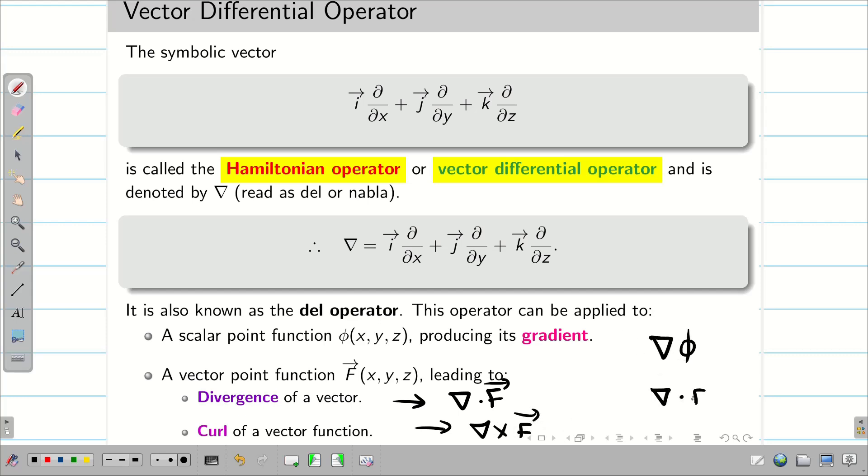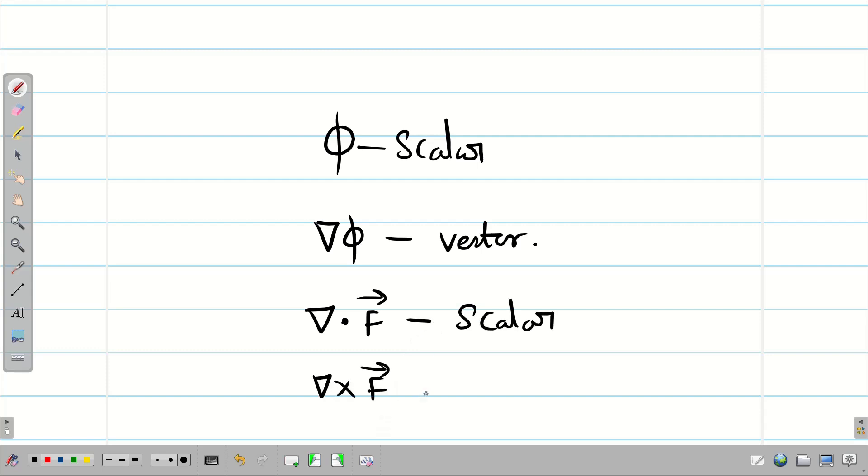Now, see phi is a scalar. If I do multiplication with del, del is a vector. So, del phi is always a vector. Then, del dot f vector. Since both del and f are vectors, then del dot f is going to be a scalar. And del cross f vector. Cross product of two vectors is always going to be a vector. These are all the simple things we have to remember.